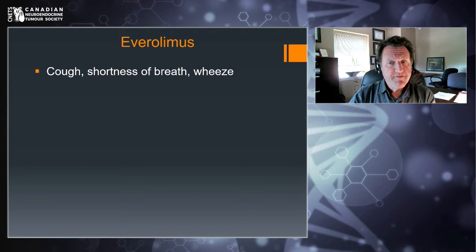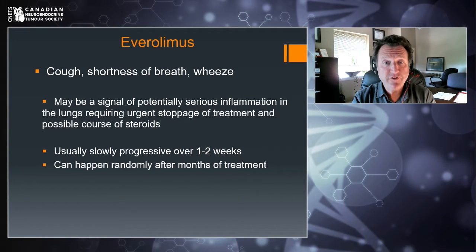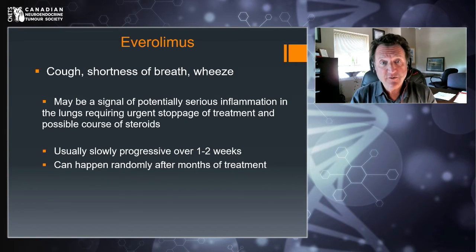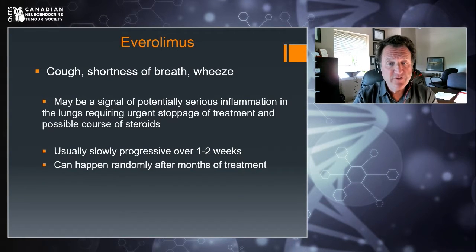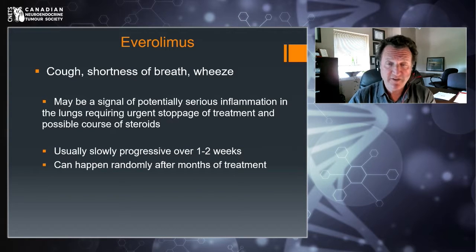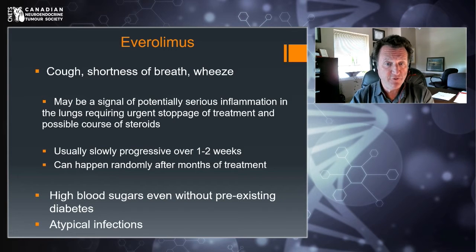An important side effect that can be sneaky involves the lungs. Everolimus can cause potentially serious inflammation in the lungs that requires urgent stopping of treatment and a course of steroids. The symptoms are cough, shortness of breath, or wheezing — it can mimic pneumonia or asthma. It usually slowly progresses over a few weeks and can happen randomly after many months of treatment. It's not an allergic reaction, so it's very important to know about it and report any new respiratory symptoms.